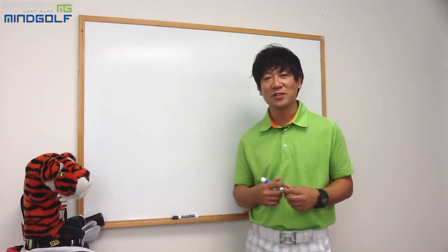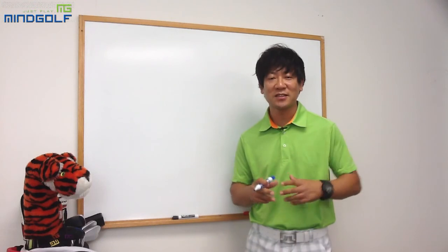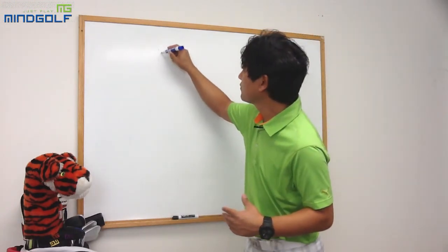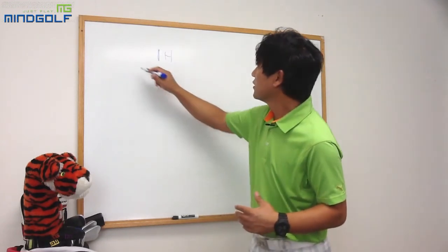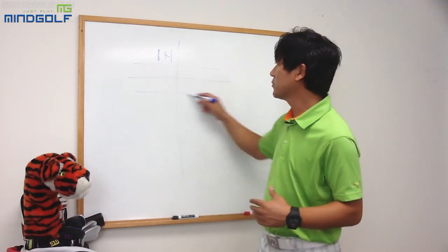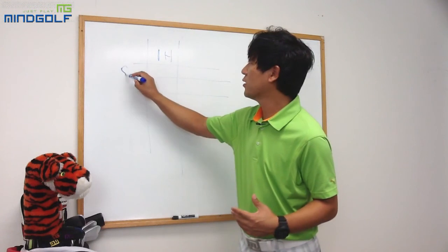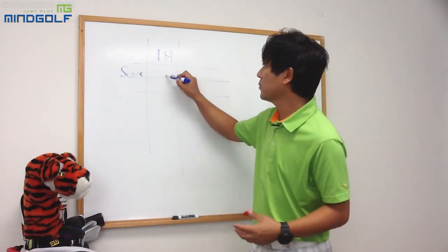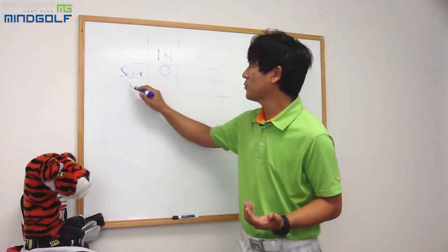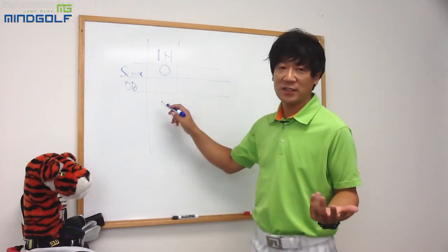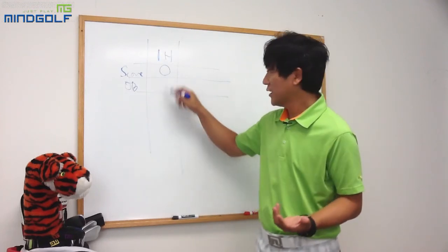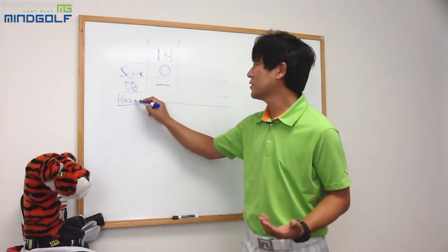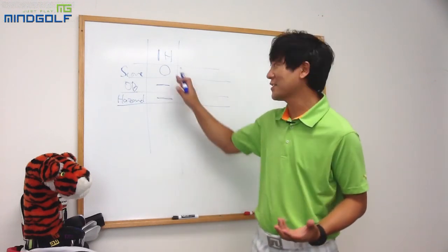마인드 골프는 스코어 카드를 적을 때 다양하게 적는데요. 하나의 스코어 카드에 여러 지표들을 적습니다. 예를 들어 1번 홀이면 스코어, OB 여부, 해저드 여부 등을 표시합니다. 파4에서 8타를 했다면 오버 숫자를 적고, OB가 있었으면 표시하고 없었으면 마이너스로 긋고, 해저드에 들어갔는지도 표시합니다.